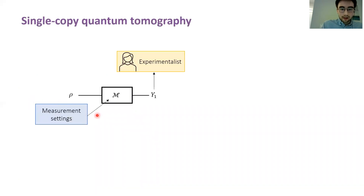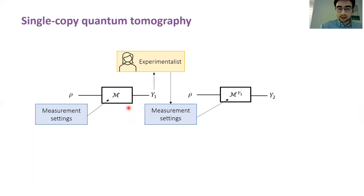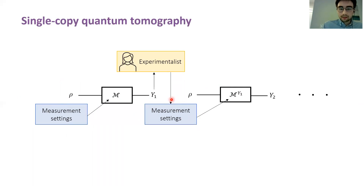Let me explain this kind of quantum tomography graphically. Suppose that our experimentalist picks a measurement from a set of measurement settings and then performs that measurement on the first copy of the unknown state, obtaining measurement outcome y_1. Then in the adaptive case, they can pick a different measurement from a set of possible measurement settings and then apply that measurement to the next copy of the state, and so on.